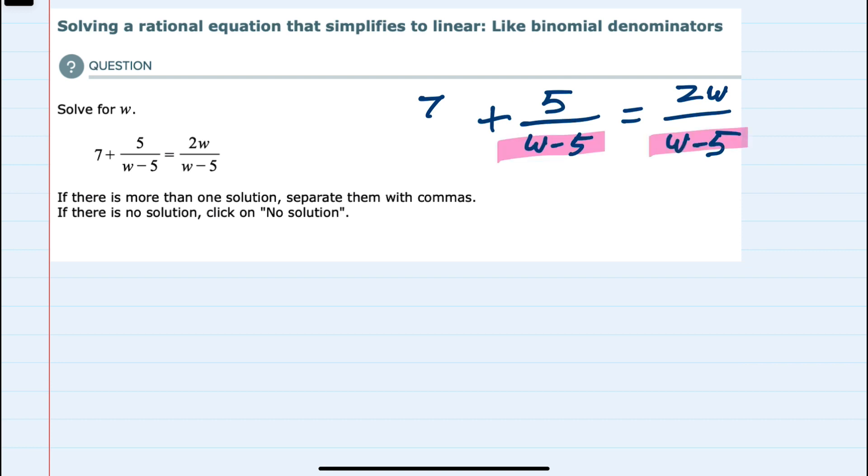Here, our denominators are both w minus 5, so that means that our LCD is w minus 5.